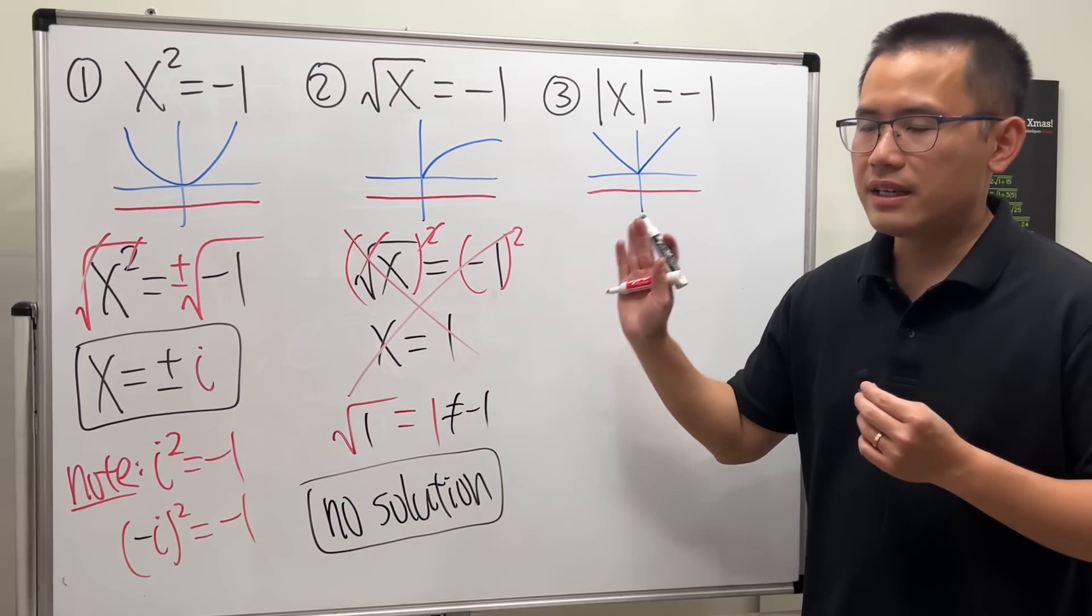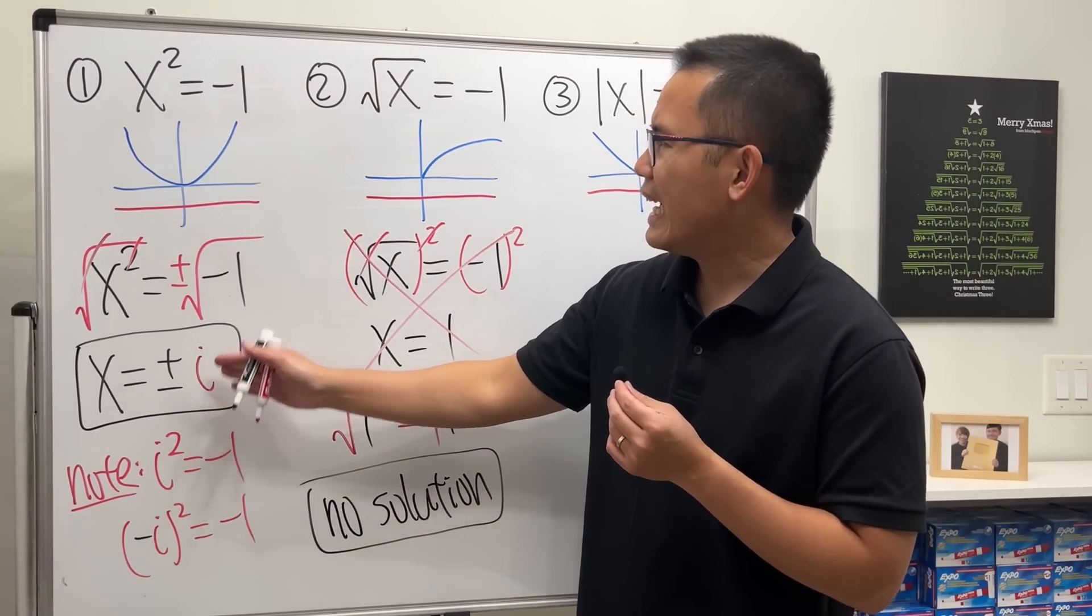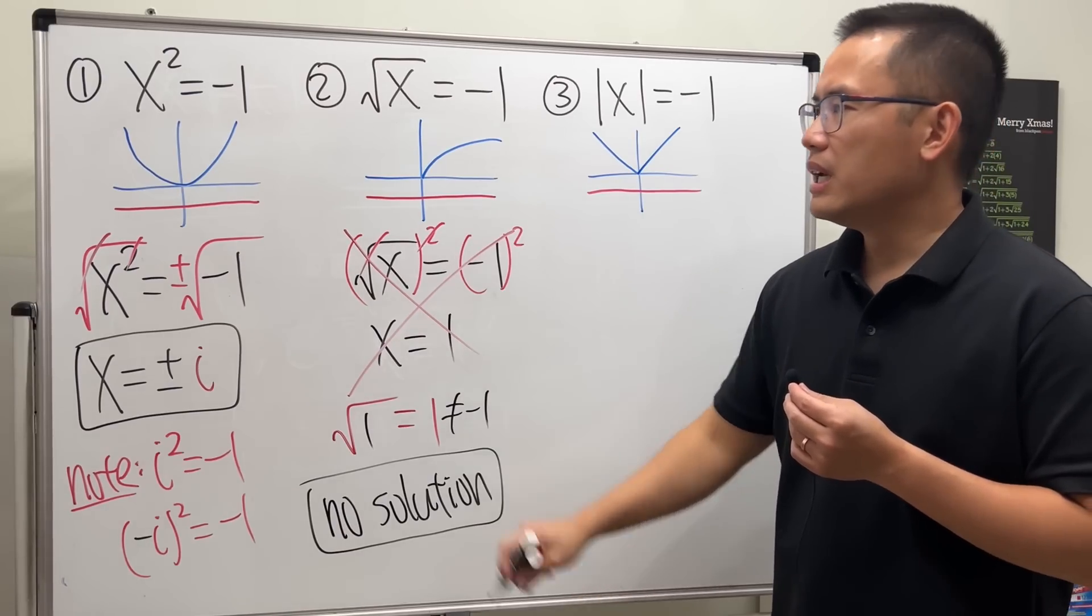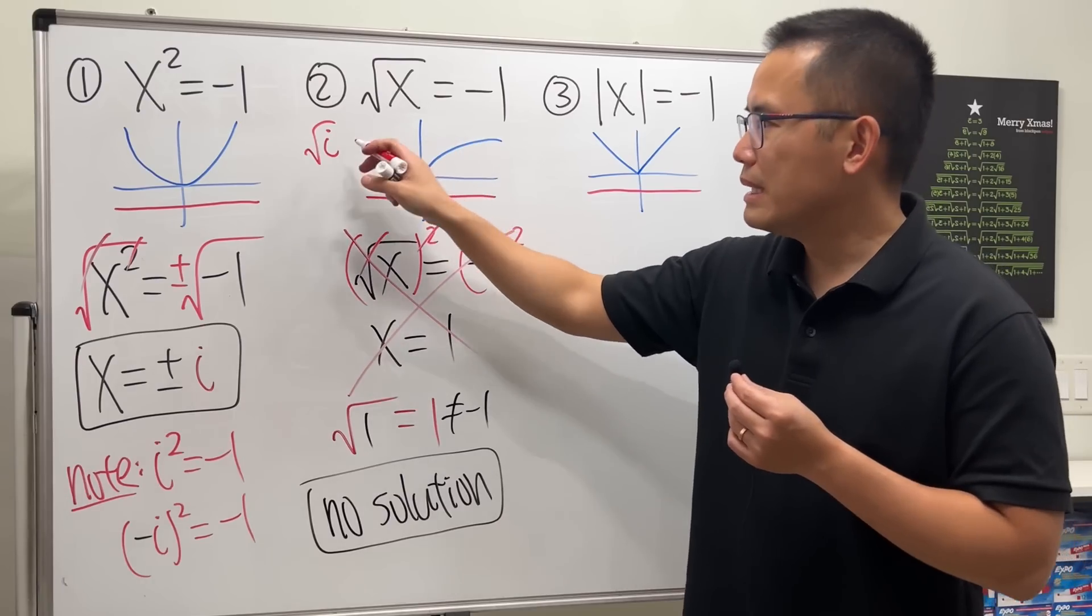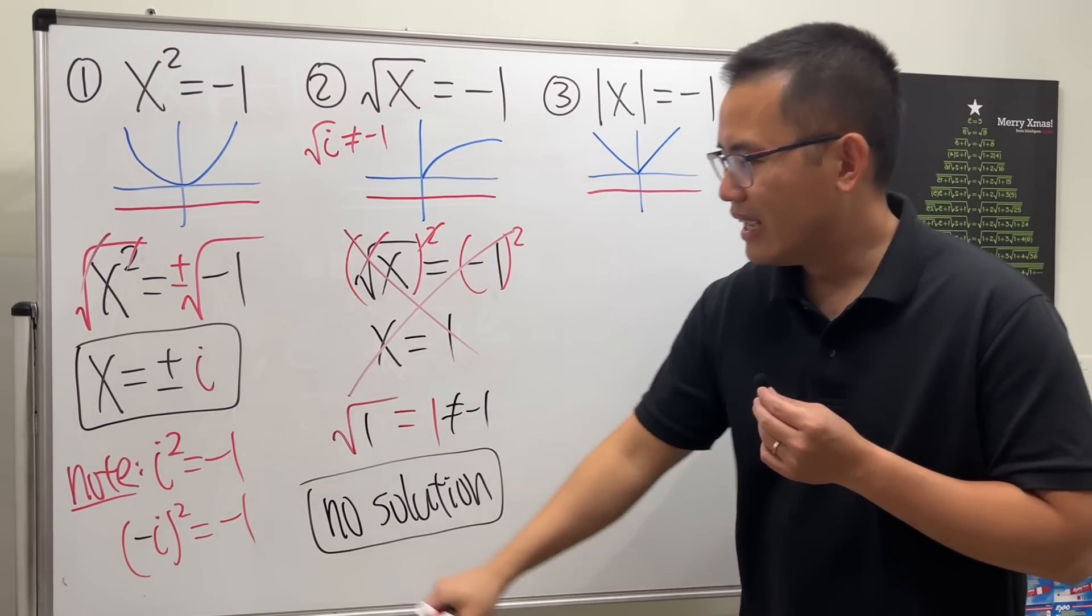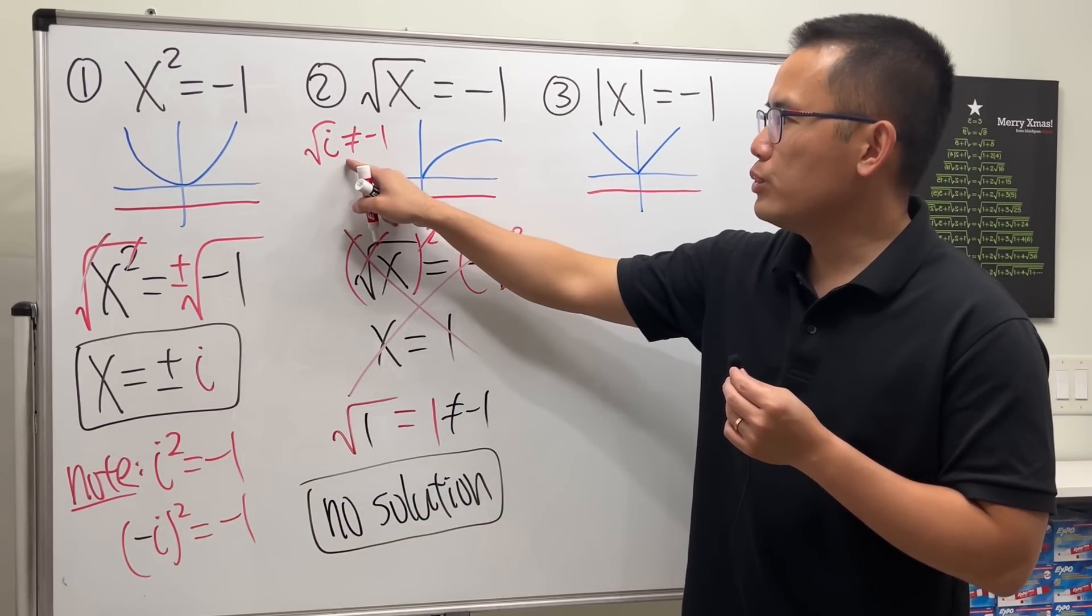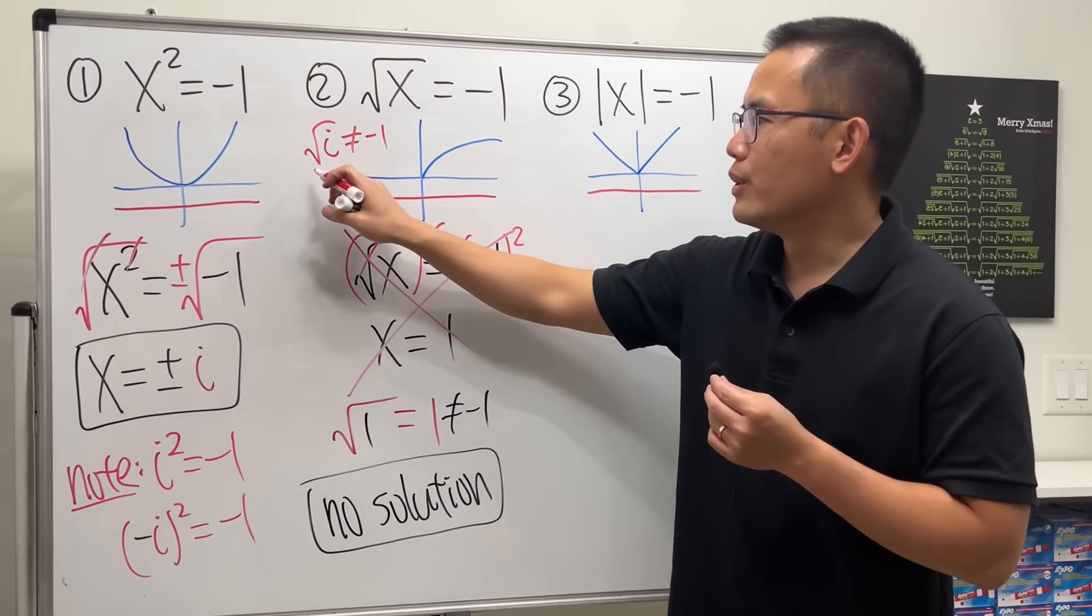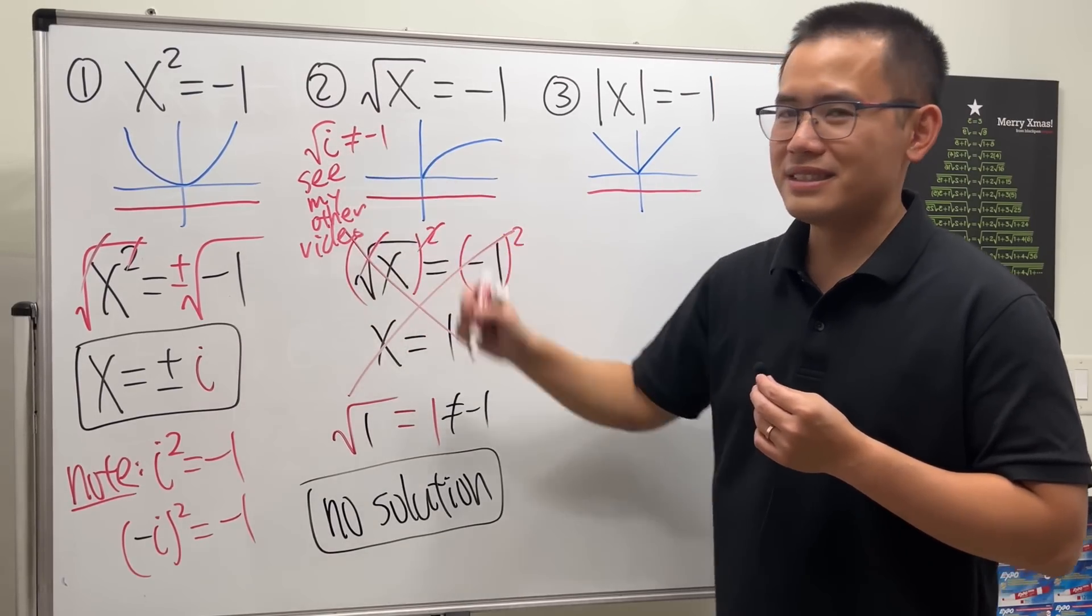And you might be wondering, can we put the i into the square root? Yes, square root of i, this right here is doable, but let me tell you this right here is not equal to negative one. i squared is equal to negative one. Square root of i, you'll see my other video. Yeah, you can see how to work that out.